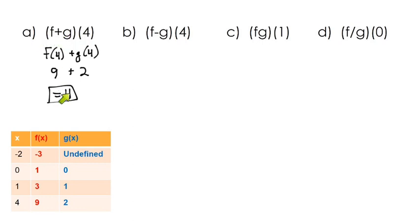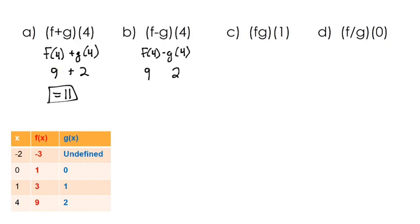So the function sum f plus g of 4 is 11. Now let's do f minus g of 4, which is f of 4 minus g of 4. We already know f of 4 is 9 and g of 4 is 2, so subtracting gives us 7.